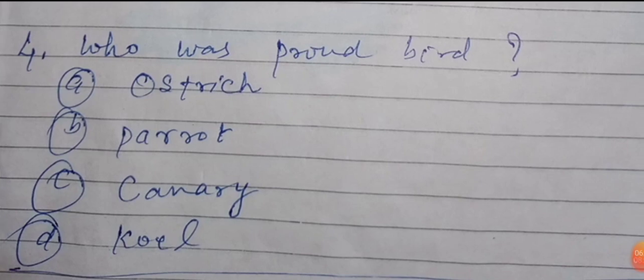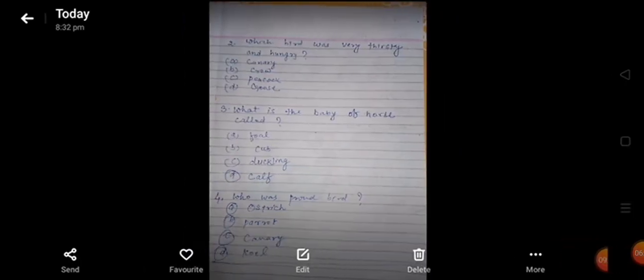Question number 4: who was the proud bird? Option A: Ostrich. Option B: Parrot. Option C: Canary. Option D: Coel. Suppose your right answer is A — you will tick the right answer A. You have to do this for all questions.